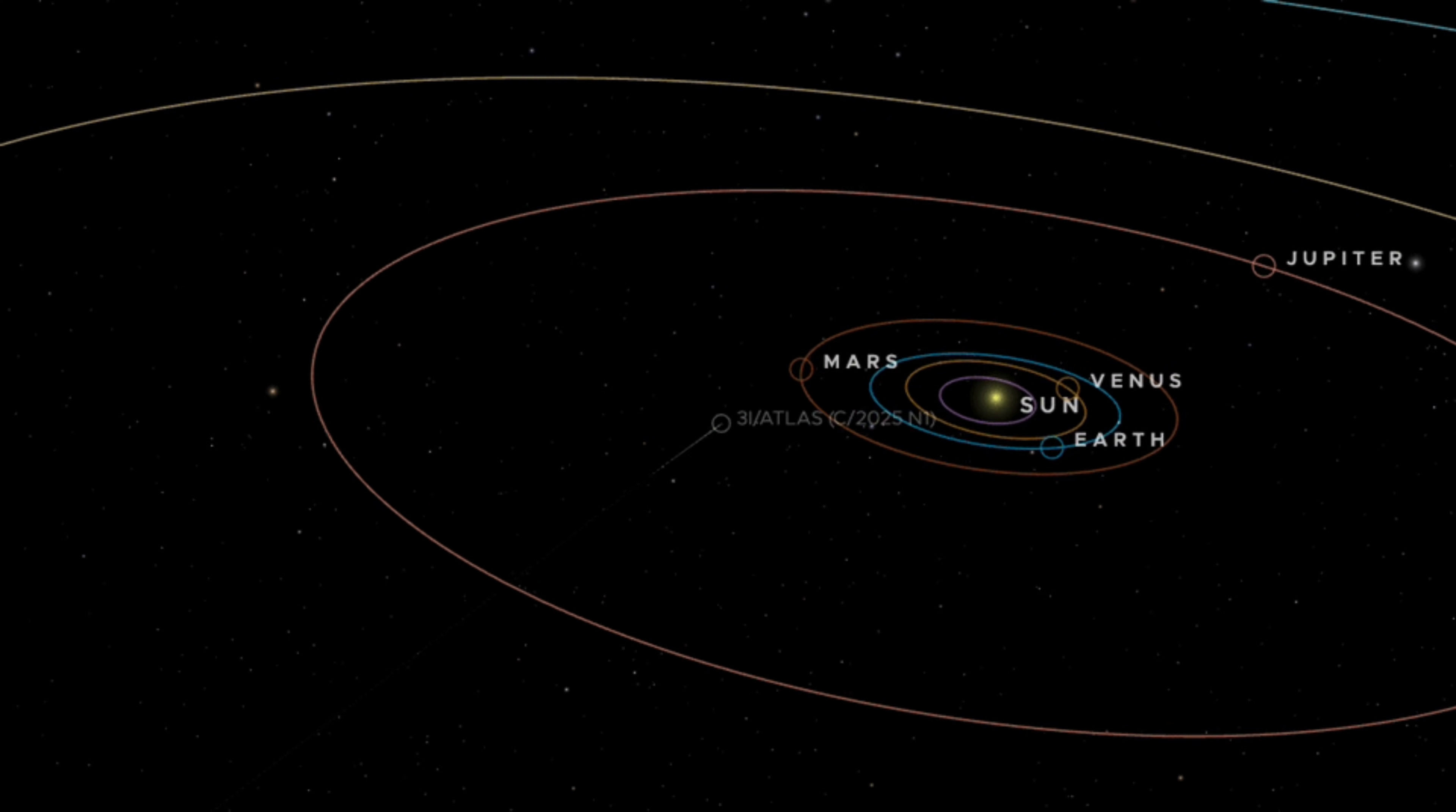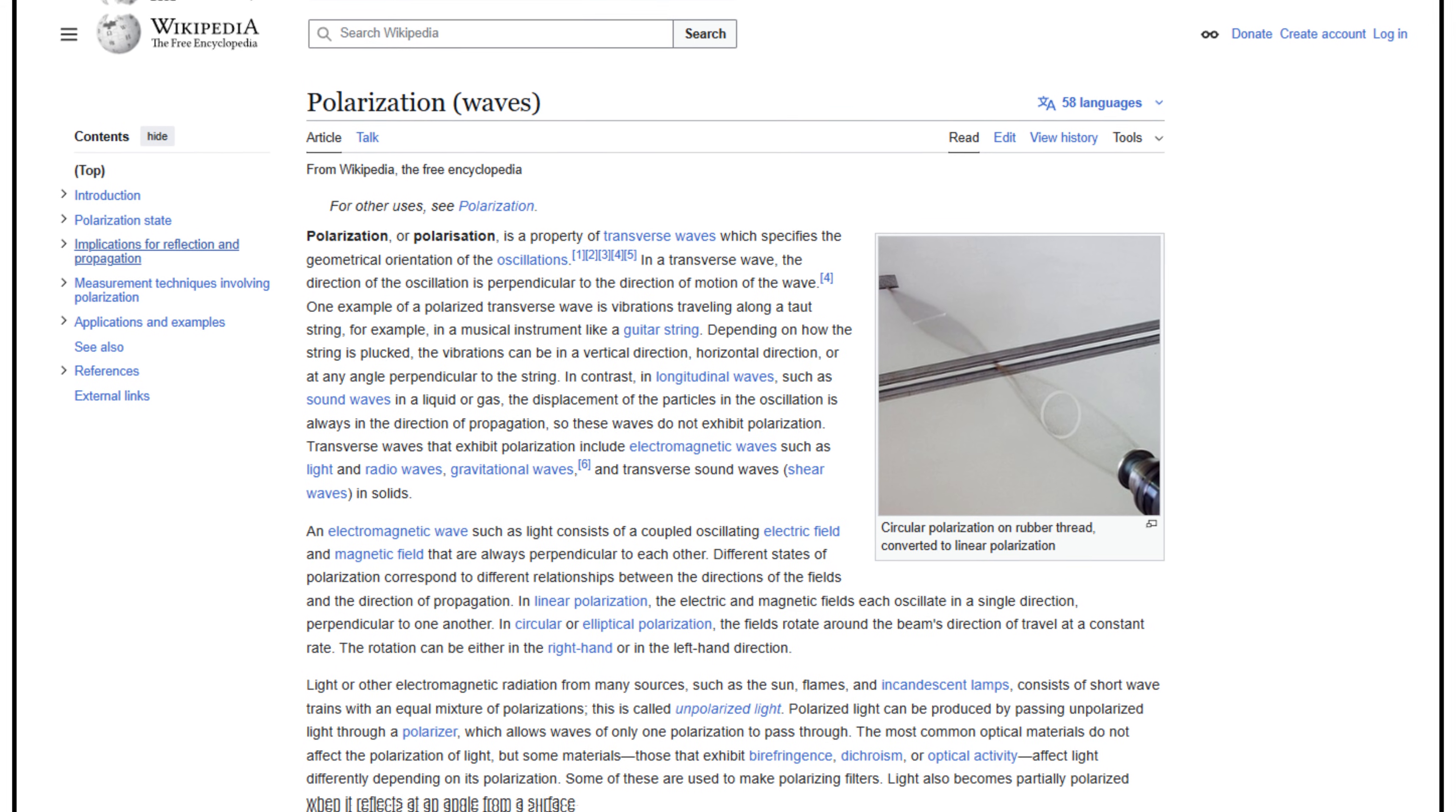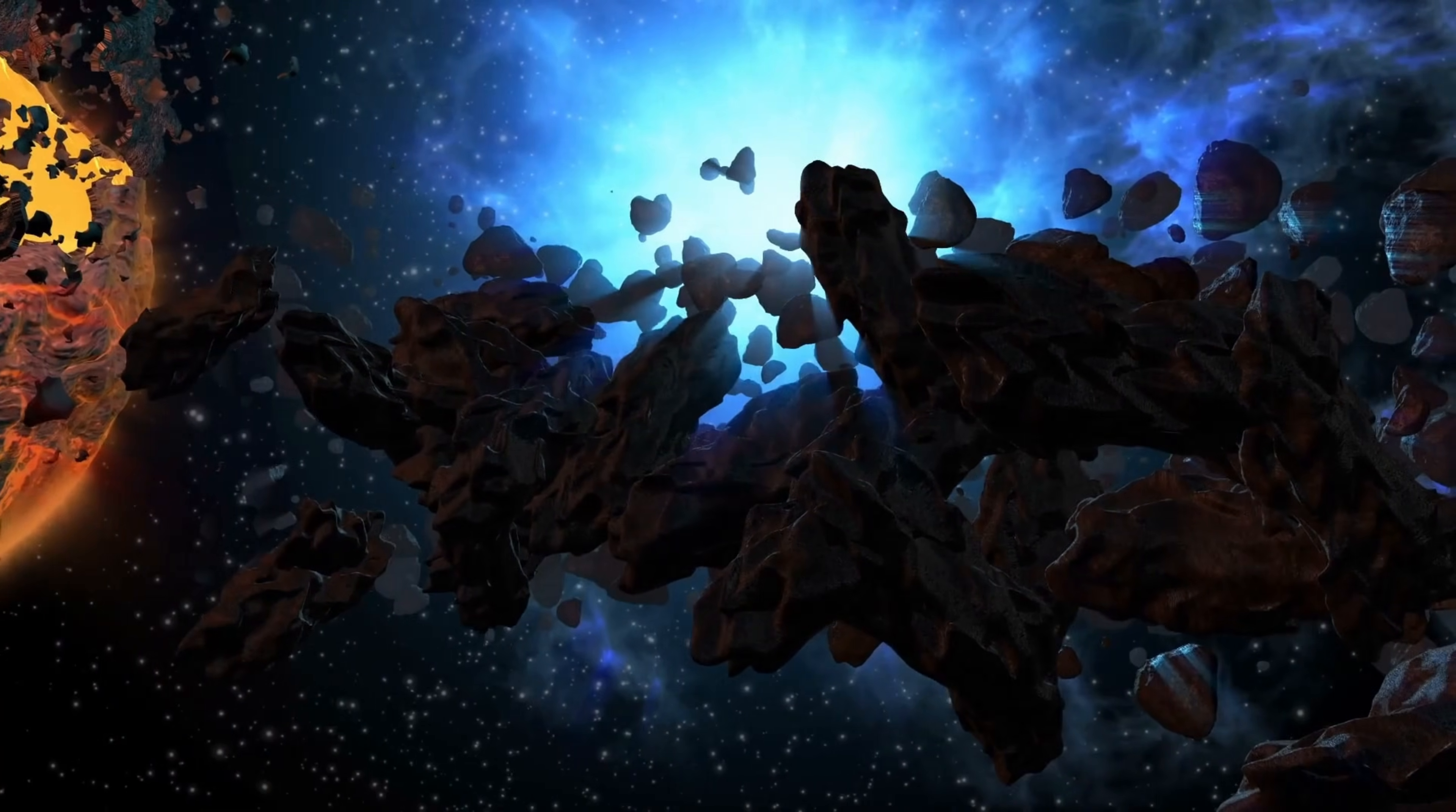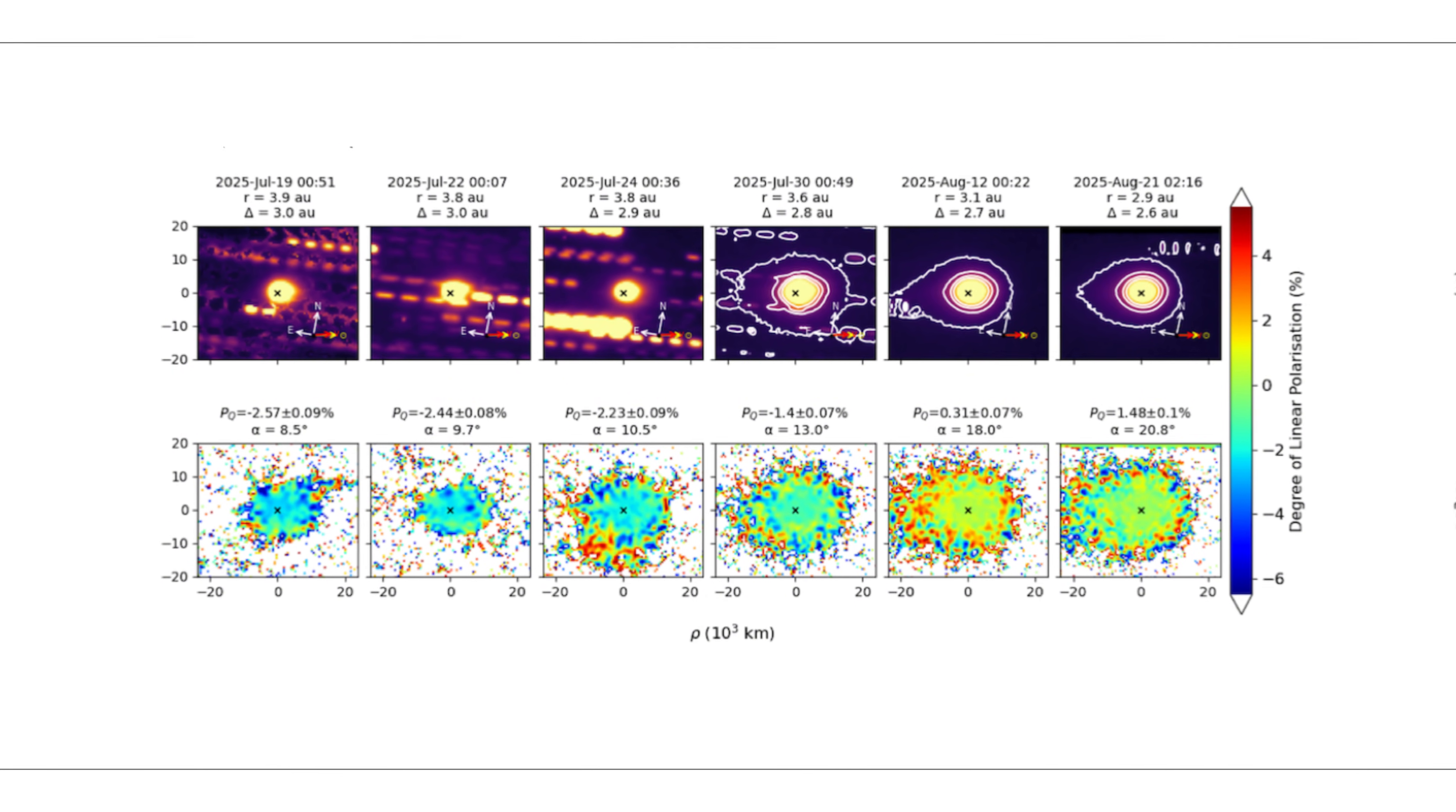Another key anomaly observed in 3I Atlas was its negative polarization, which was entirely unexpected. Polarization is a phenomenon in which light reflects off an object in a particular direction, and in most comets, light is positively polarized. This is the result of sunlight reflecting off the icy surfaces of comets and is considered a standard physical process for natural bodies in space. However, 3I Atlas displayed negative polarization, a feature that is highly unusual for a comet.